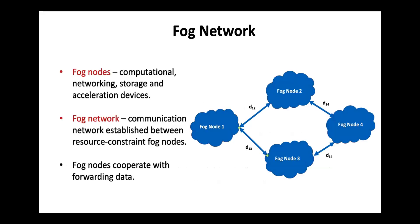First, let's see what a fog network is. A fog network consists of fog nodes, which are computational, networking, storage, and acceleration devices. The figure depicts a network of four fog nodes. Edges between the fog nodes indicate communication links, with edge weights indicating the distance between the nodes. These fog nodes are resource-constrained and cooperate with forwarding data.